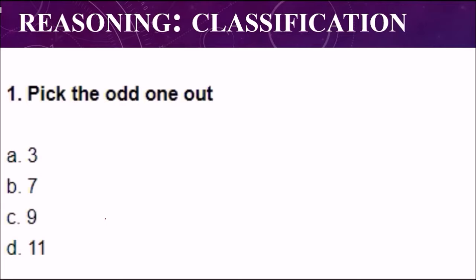The correct option is option number C, that is 9. Nine is the correct option and that is different from 3, 7, and 11 because 3, 7, and 11 are prime numbers. And 9 is not a prime number. Prime numbers have only two factors: one and the number itself.